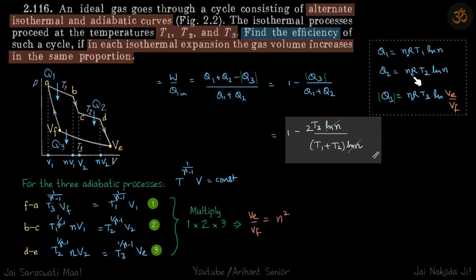And for this process Q3, it is n₀RT3 ln(Ve/Vf). We are using a mod, so that's why we have put it as the higher value divided by the lower value. Here everything is known to us, it's given in the problem. Here we don't know what is Ve by Vf.